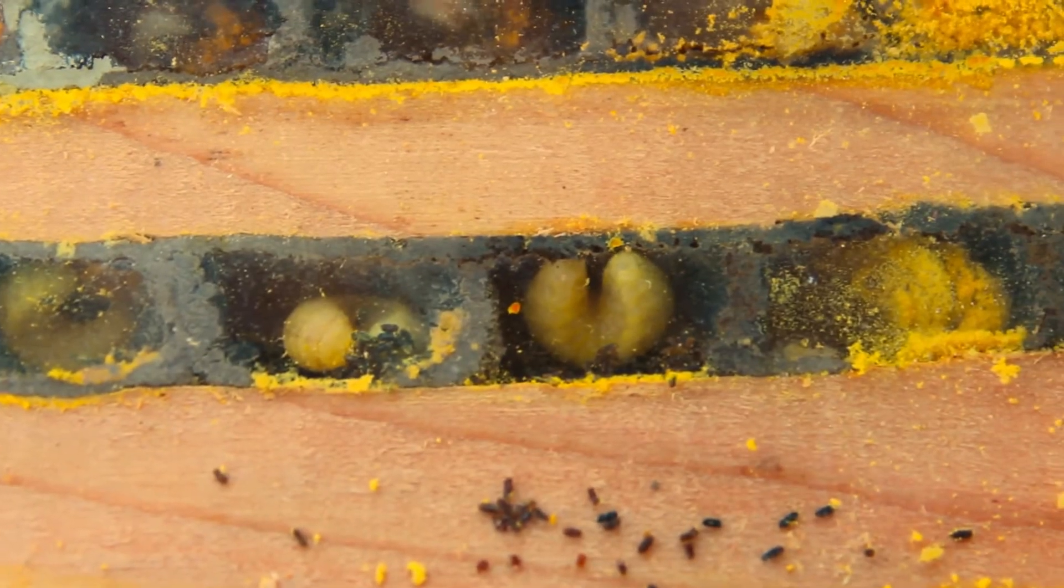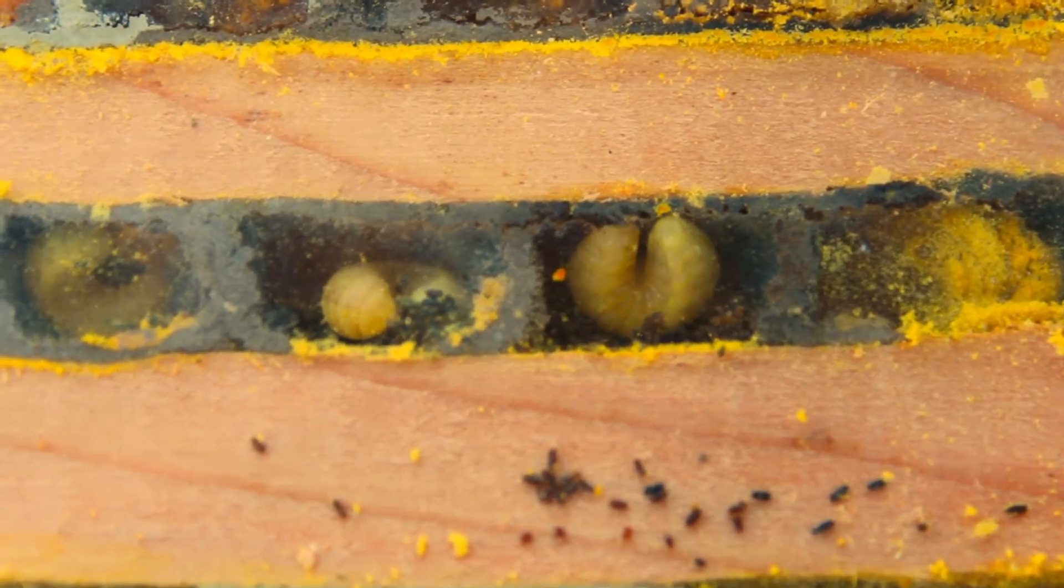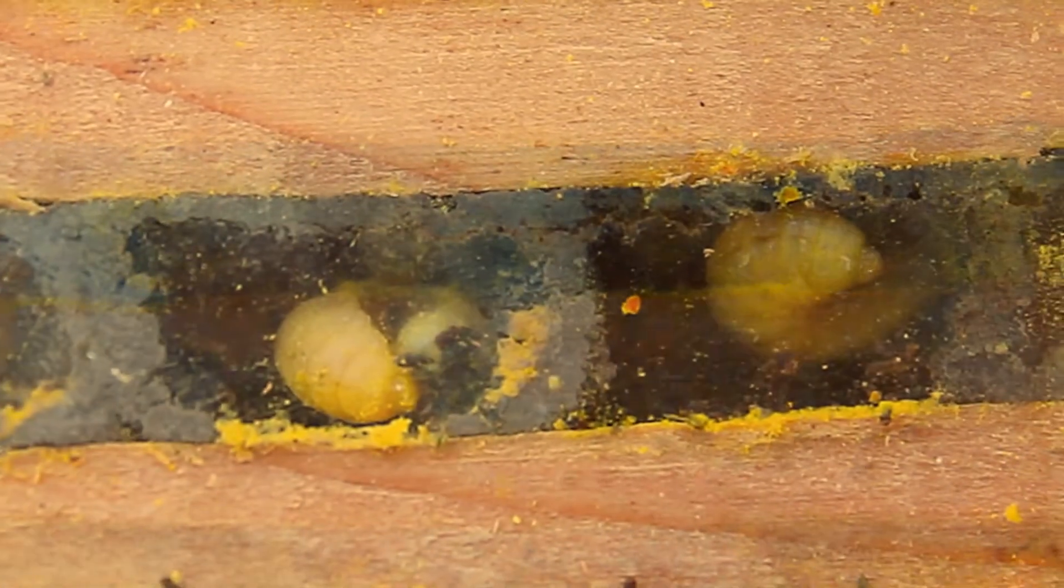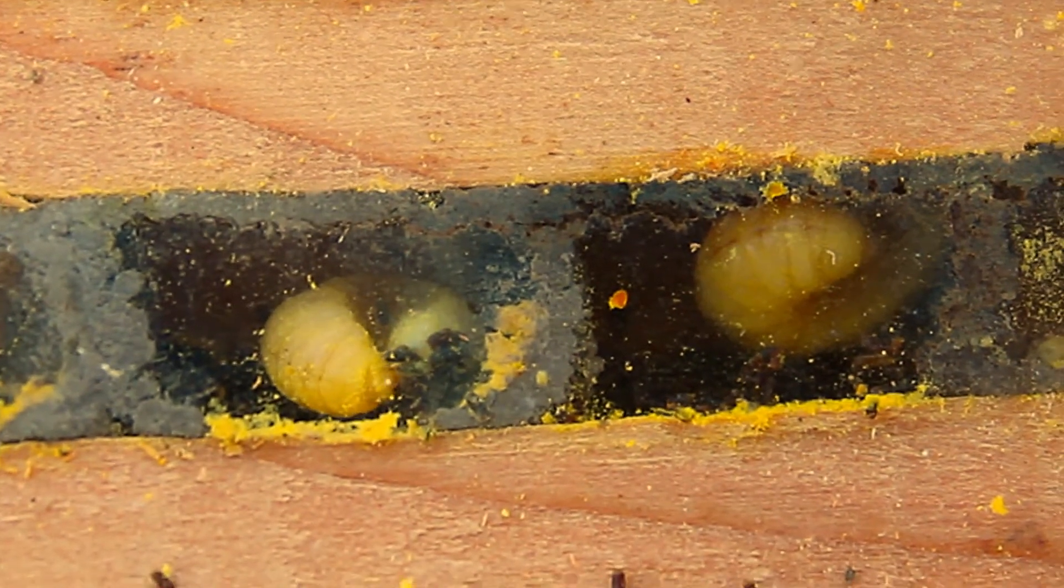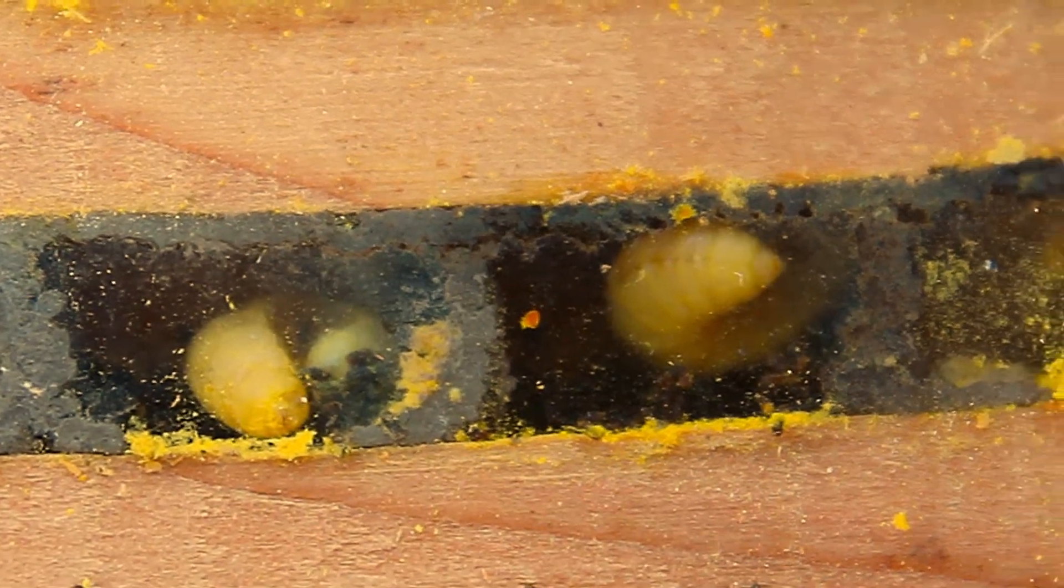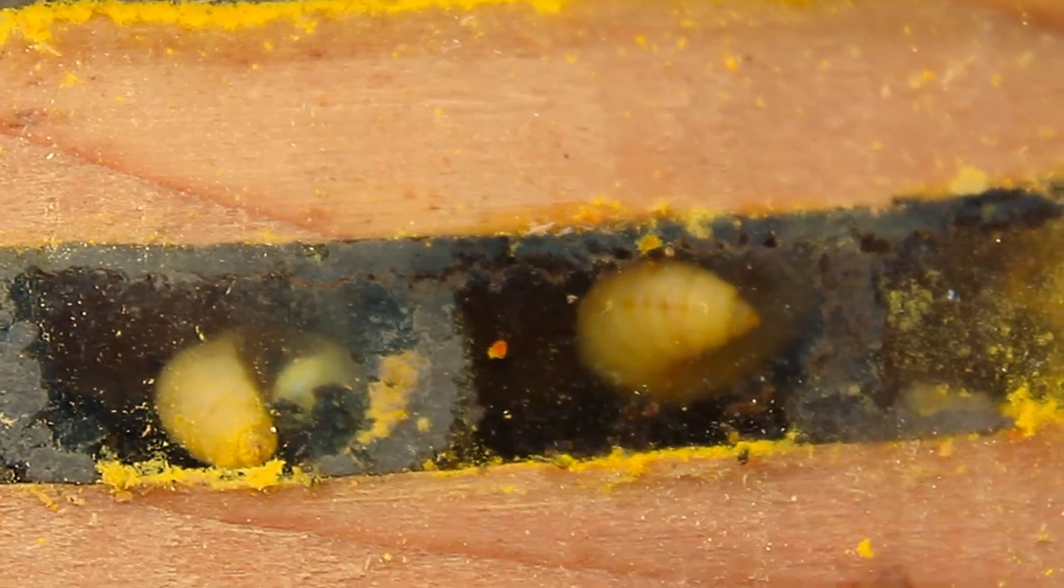Each egg will hatch after about a week and the resulting larva will go through five stages of development. It will eat the pollen bundle as it grows before finally spinning a cocoon. Once in the cocoon, the pupil will develop into an adult bee and remain in the cocoon for about eight months.